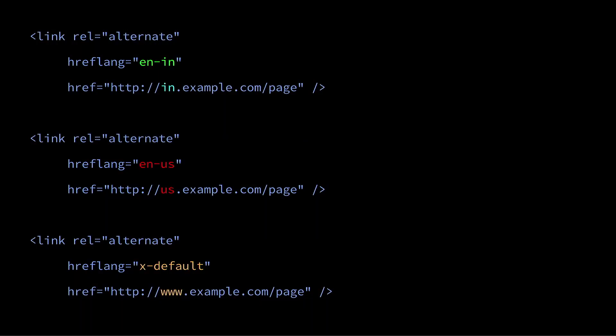Here's an example code. You're telling Google that in.example.com/page is the English Indian version of that page — perhaps with prices in INR for selling a shoe. Then you have us.example.com tagged as hreflang en-us, probably with USD pricing targeting US customers. And finally, you have a default page for every other person from all other parts of the world.